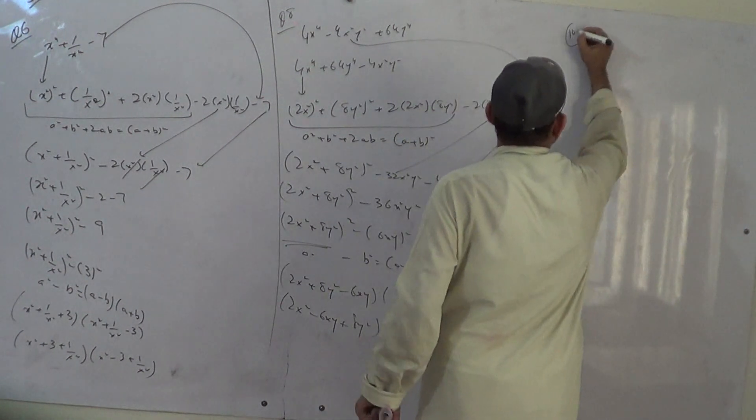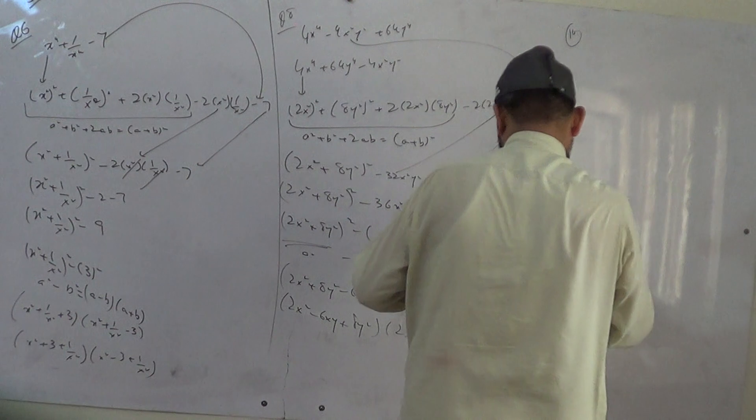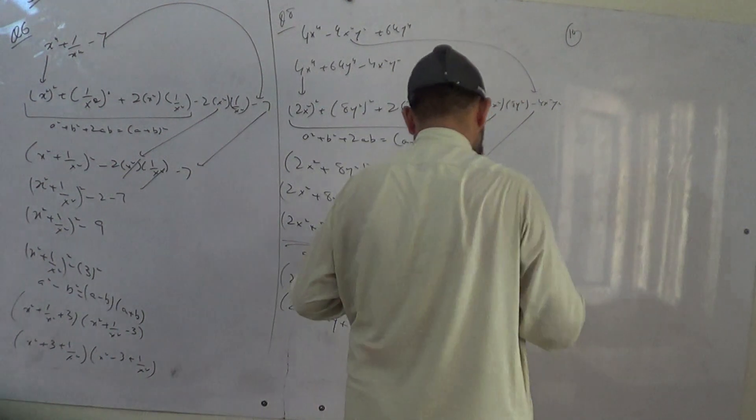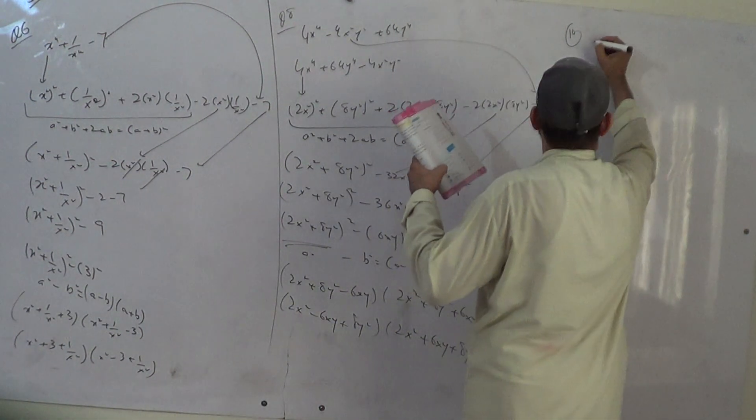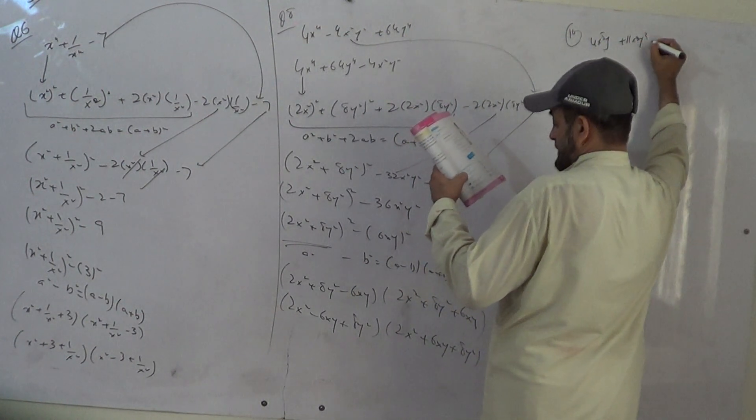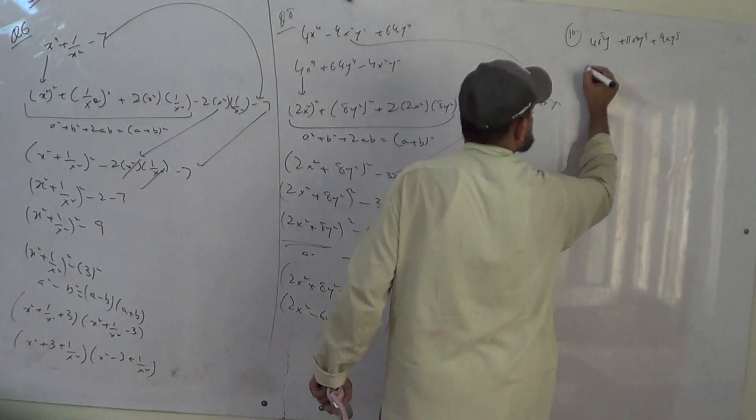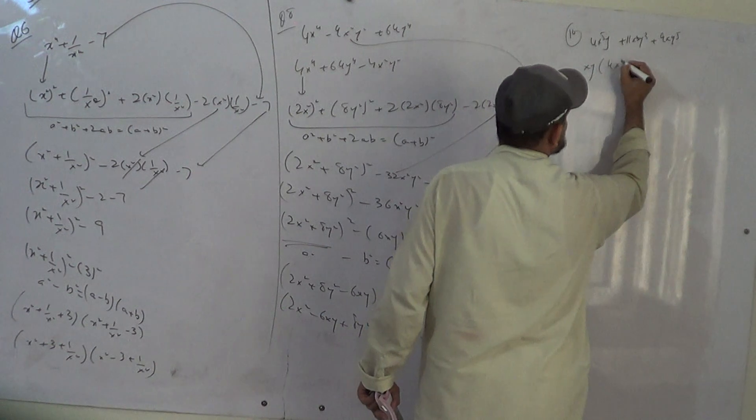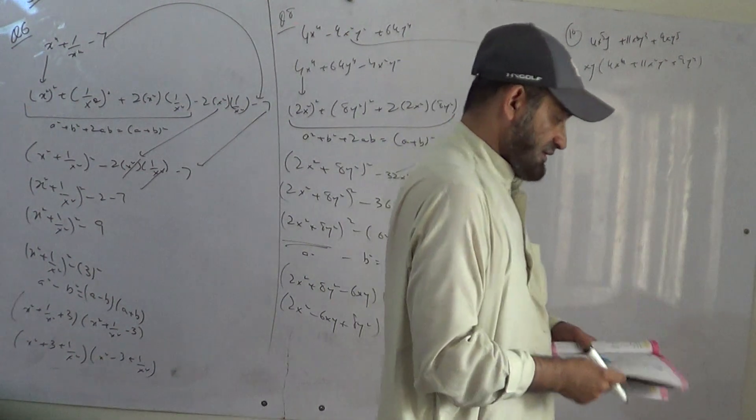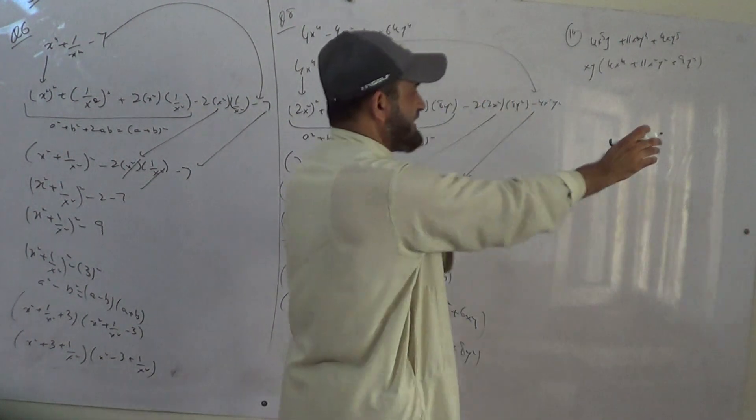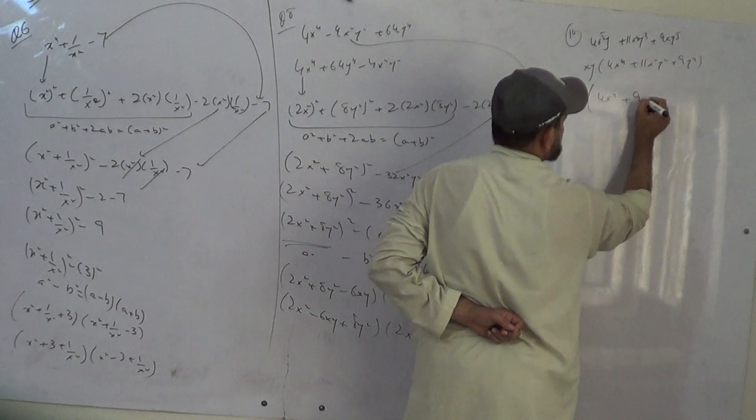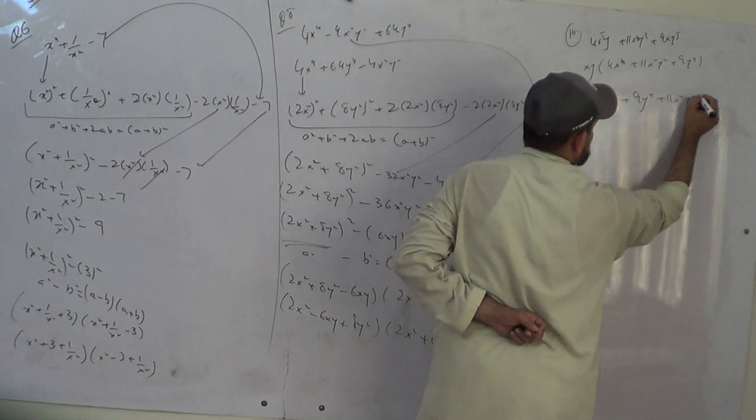Now we do question number 10. Question number 10 is 4x to the 5 y plus 11x square y cube plus 9x cube. X and y is common. 4x to the 4 plus 11x cube y square plus 9x square. Now arrange that in order. We get 4x to the 4 plus 9x square plus 11x cube y square.